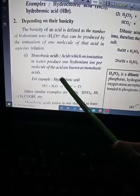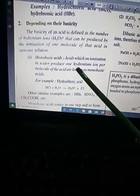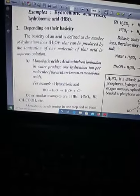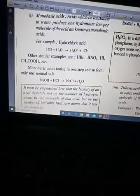Monobasic acids produce one hydronium ion. Other examples are HBr, HNO3, HI, and acetic acid. They all produce one H+ ion.